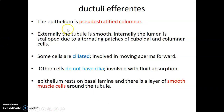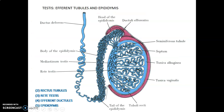The efferent ductules are lined by pseudostratified columnar epithelium. Externally the tubule is smooth, but internally the lumen is irregular due to alternating patches of cuboidal and columnar cells. Some cells are ciliated, involved in moving sperms forward. Other cells do not have cilia and are involved in fluid absorption. The epithelium rests on a basal lamina, and there is a layer of smooth muscle cells around the ductuli efferentes. The seminiferous tubules open into tubuli recti, which open into rete testis, which open into efferent ductules that empty sperms into the epididymis.